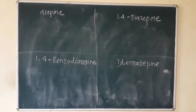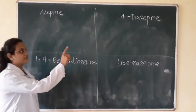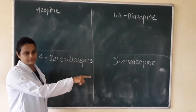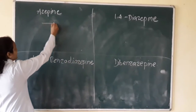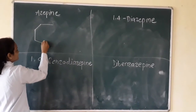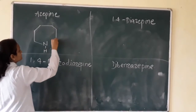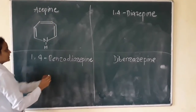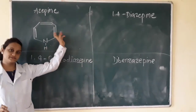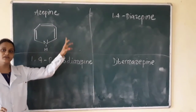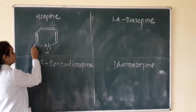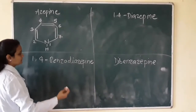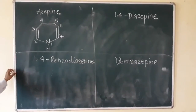Next one: azepine. One, four — right of pine. One, four, diazepine, and diazepine. First: azepine. Azepine — numbering clockwise points. One, 2, 3, 4, 5, 6, 7. Example: carbazepine.